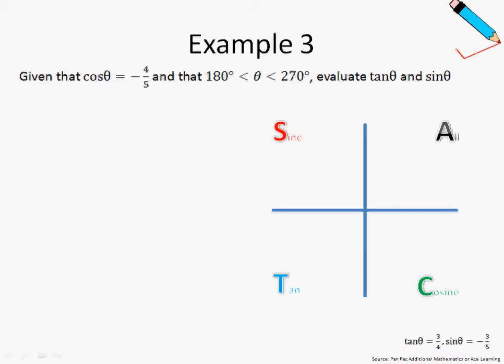Given that cosine θ equals negative 4 fifths and that θ is between 180 degrees and 270 degrees, we want to evaluate tangent θ and sine θ.